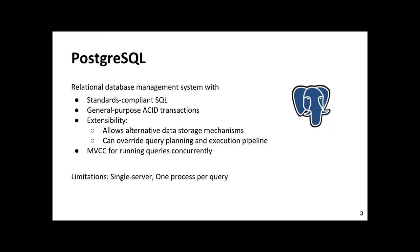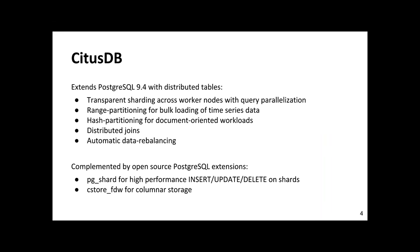The limitations of Postgres are that it only runs on a single server, and it only uses one process per query, meaning you can only use a single core to answer a SQL query. For the analytics use case, that's not great because we have to process a very large amount of data in a short time. CitusDB extends Postgres 9.4 to relieve those limitations by adding the notion of a distributed table — a table that's not stored on the server itself, but distributed or sharded across a cluster of worker nodes. When you query the distributed table, the query is parallelized across those worker nodes.